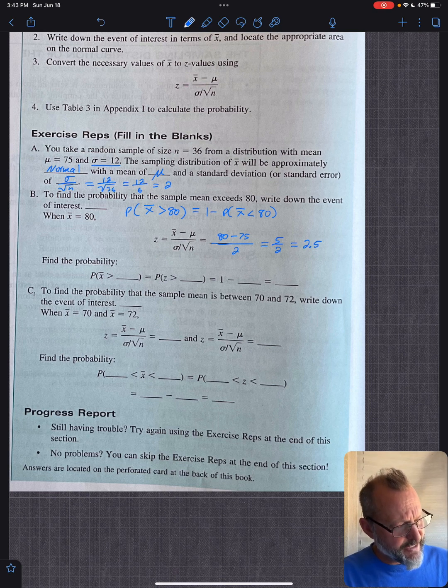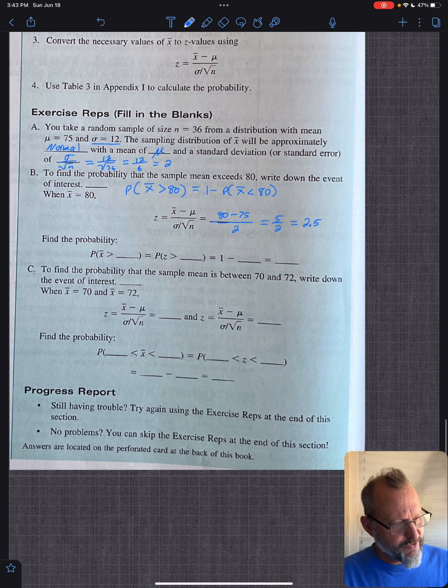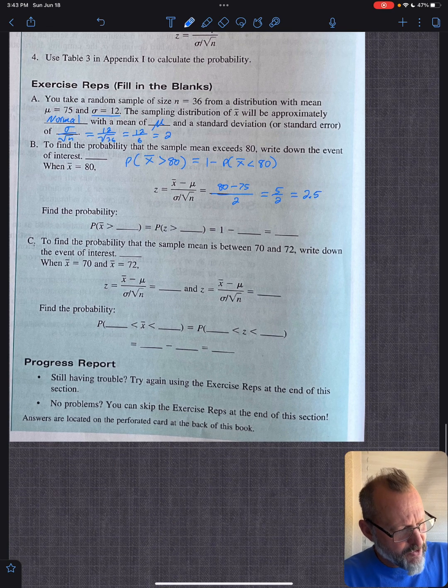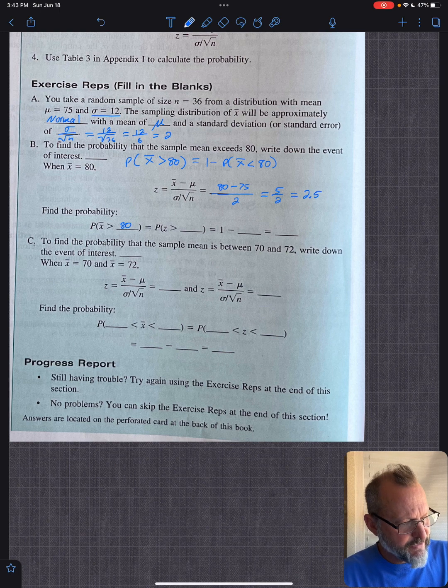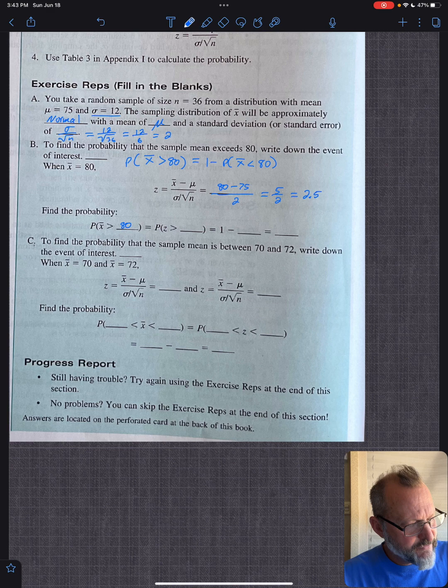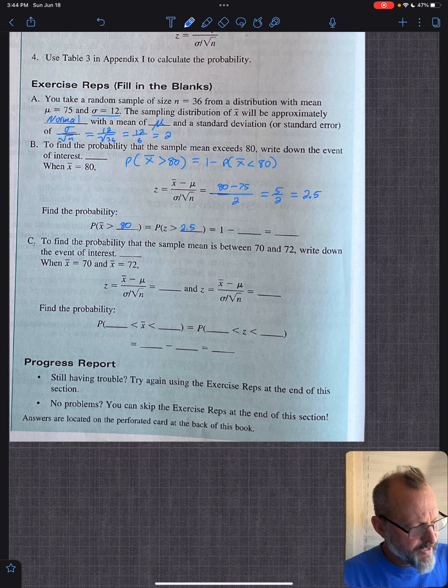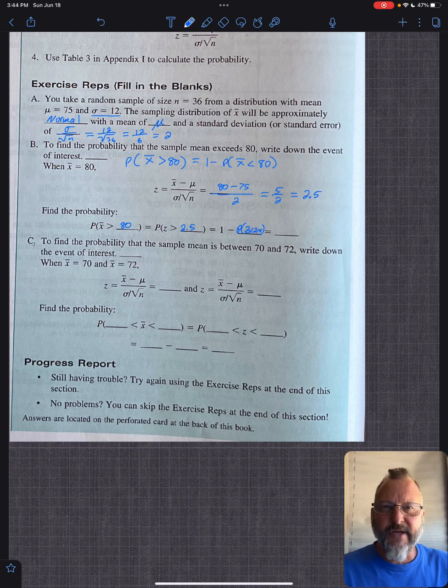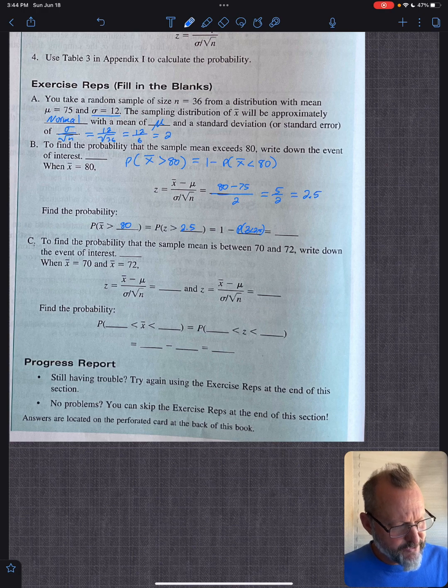So it actually gives you that calculation that I just wrote above. So X bar greater than 80, so we're just rewriting it, I guess. Z is greater than 2.5. So that part's new. And it's 1 minus the probability that Z is less than 2.5. Now we've got to look that up. And I'm doing this on the spot, by the way. I haven't done this ahead of time.